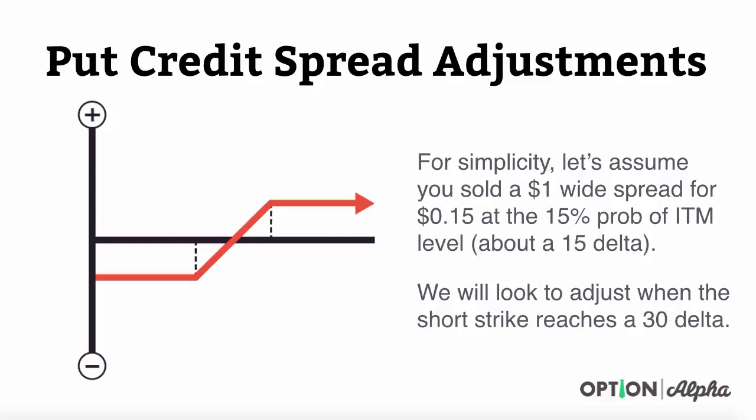For simplicity in our example today, let's just assume that you sold a $1 wide spread for about $0.15, or $15, at the 15% probability of being in the money level. This is also about a 15 delta if your broker platform doesn't calculate probabilities. What we would do is, after making this trade, we would first be triggered to make an adjustment when the short strike of our strategy reaches a 30 delta.